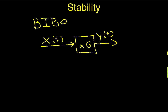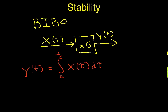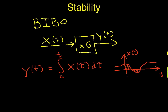Let's look at another system where the output y of t is the integral from time 0 to t of the input x of tau, where tau is a dummy variable of integration. Conceptually, what this system does is — if I graph the input x of tau — it computes the area under x from time 0 up to some specified value of time t. So basically, the output of the system at any given time is the area between time 0 and time t.